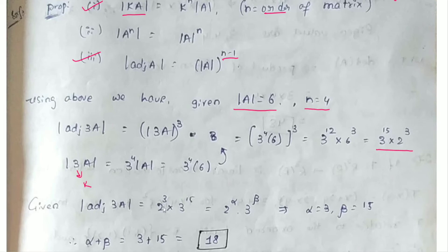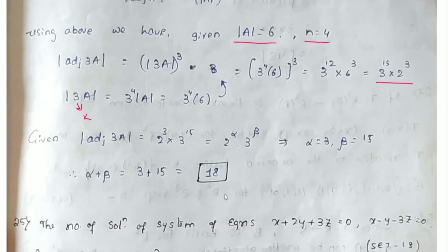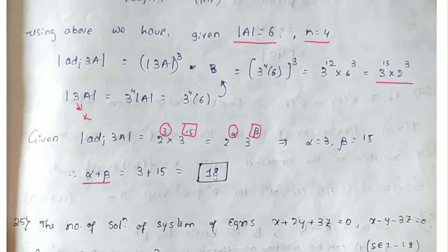Comparing with 2 to the power alpha into 3 to the power beta, we get alpha equals 3 and beta equals 15. Therefore, alpha plus beta equals 3 plus 15, which is 18.